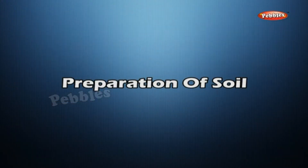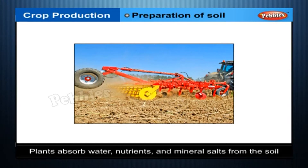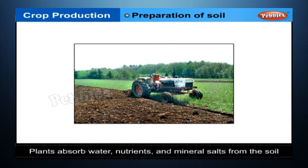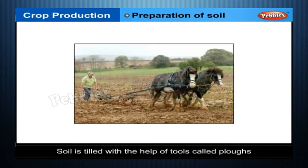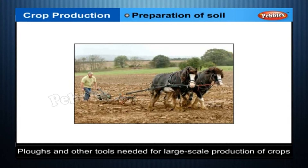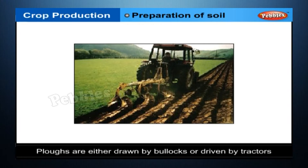Preparation of Soil. Soil is the main medium in which plants grow. Plants absorb water, nutrients and mineral salts from the soil. It is therefore important to prepare the soil well to ensure a healthy produce. Plowing: soil is tilled with the help of tools called plows. Plows and other tools needed for large scale production of crops are called agricultural implements. Plows are either drawn by bullocks or driven by tractors.